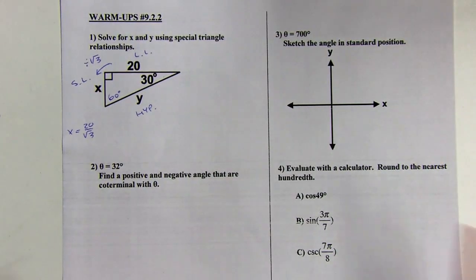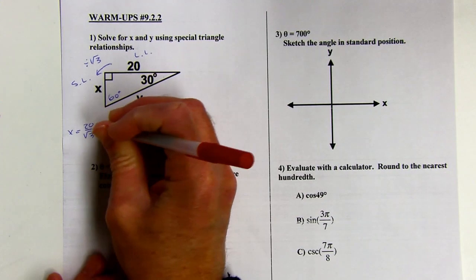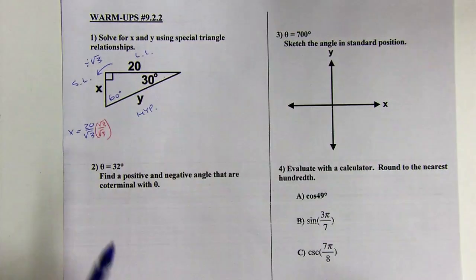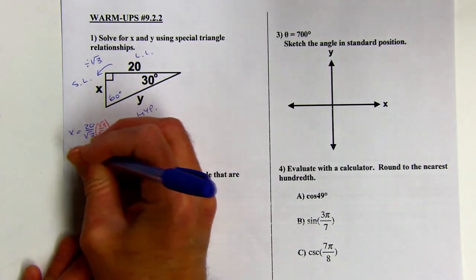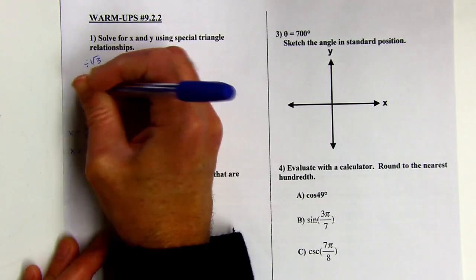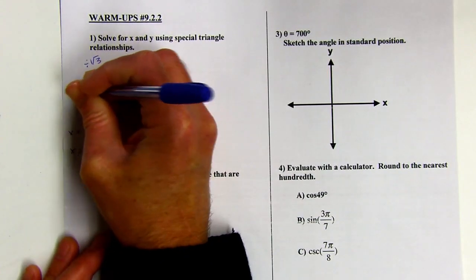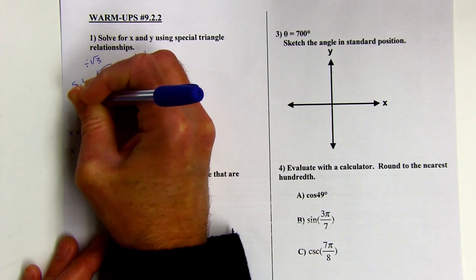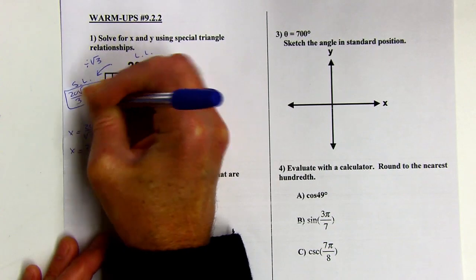Okay, so you could write it like that, but we want to put it in simple radical form by rationalizing the denominator. So that's going to come out to 20 root 3 over 3. Okay, and that's what X is. So here, I'll put that up here. 20 root 3 all over 3. Okay, so there's my short leg.